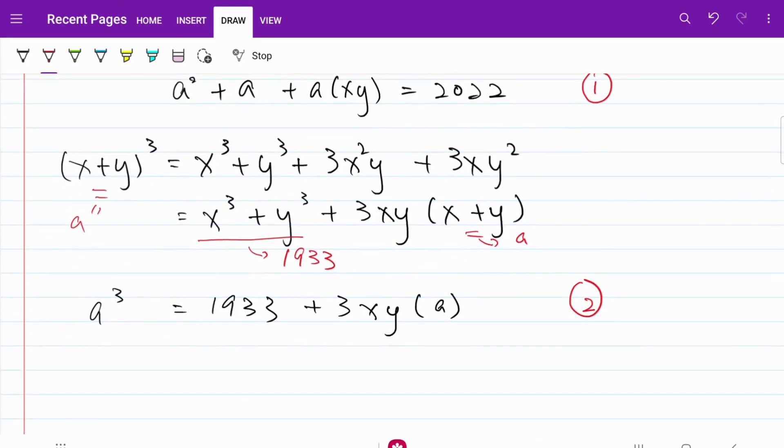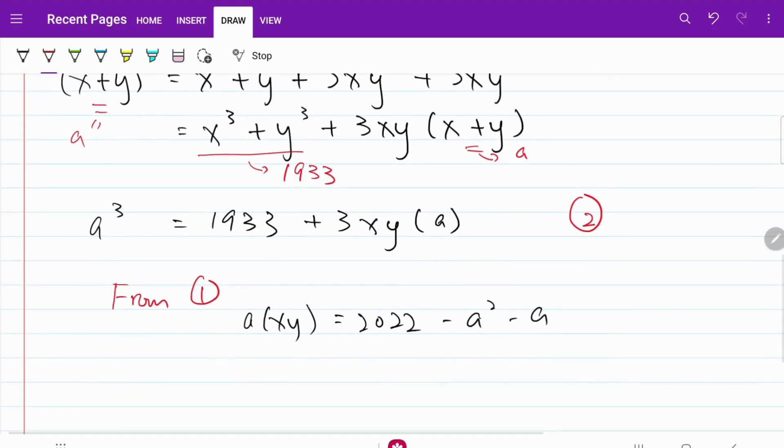If I do some simple rearrangement on equation 1 and isolate a multiplied by xy, what I have is actually a multiplied by xy is equal to 2022 minus a squared minus a.